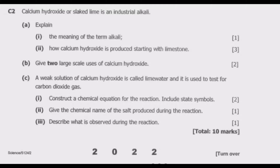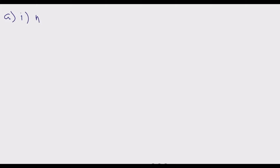Calcium hydroxide, or slaked lime, is an industrial alkali. Question C2, part one: explain the meaning of the term 'alkali.' So basically we are just defining what an alkali is. When you are talking about an alkali, you are talking about a hydroxide that is soluble in water.